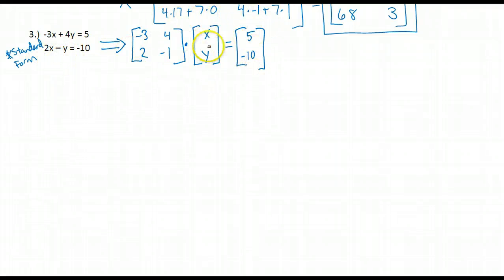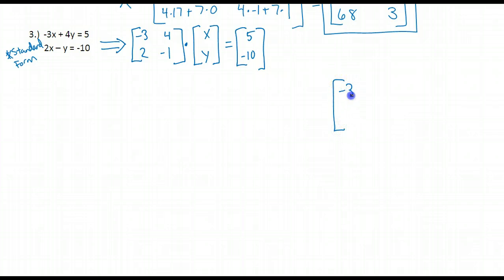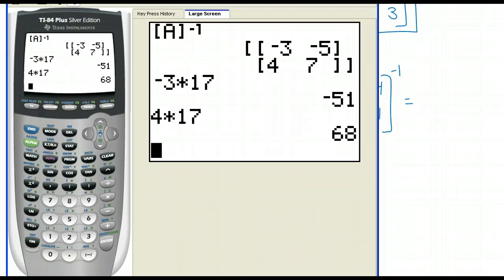At this point, to solve for x and y, I need to undo what's happening to this matrix. I need to undo being multiplied by this matrix, so I'm going to multiply by the inverse. Off to the side, I'm going to find the inverse of this matrix using my calculator.